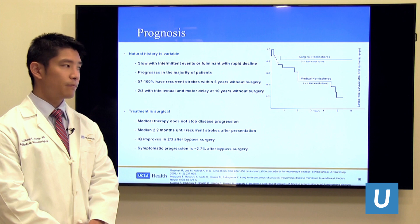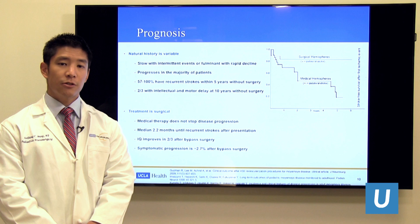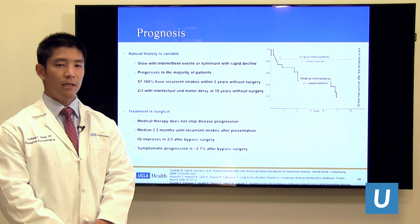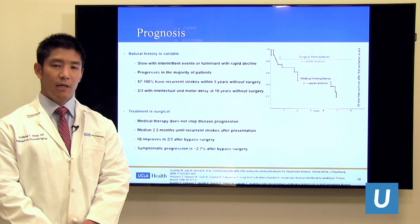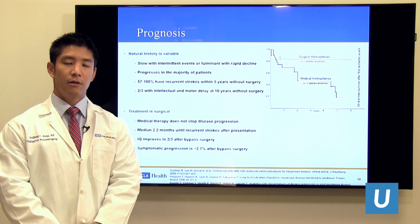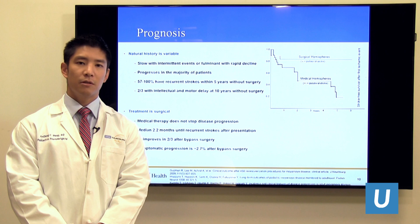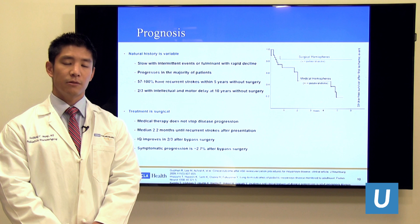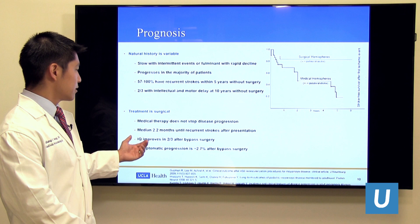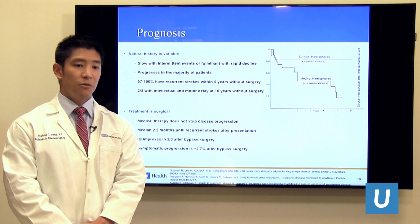If left untreated, population studies show that Moyamoya disease is almost always progressive and can lead to severe strokes, neurocognitive decline, and motor deficits in anywhere between two-thirds to 100 percent of patients. With treatment, however, we can reduce the risk of symptomatic progression to single-digit percentages — a dramatic improvement in the natural history of this disease.